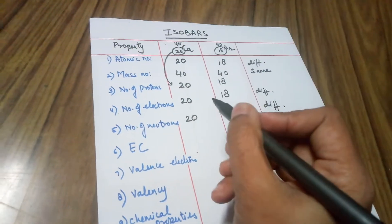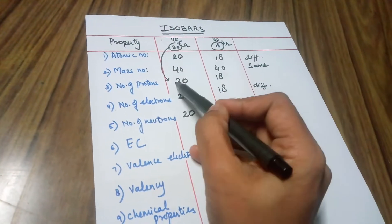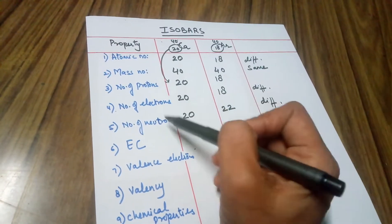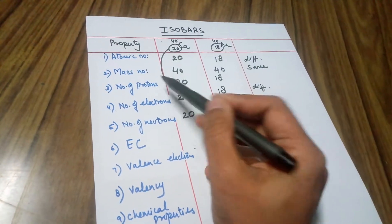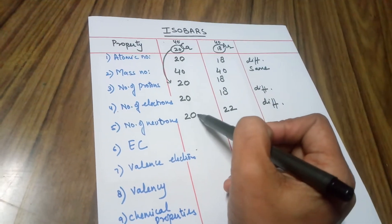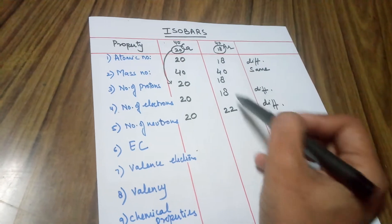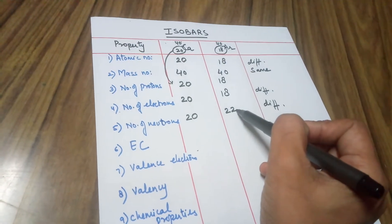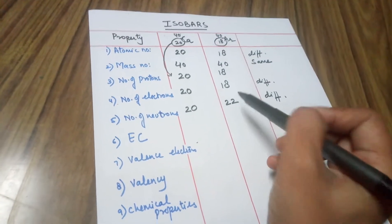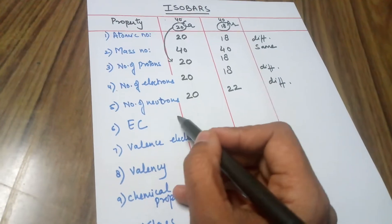But when you talk about the sum of protons plus neutrons: for calcium that's 20 plus 20, which is 40; for argon that's 18 plus 22, which is also 40. So the sum remains the same. Let's talk about the electronic configuration.